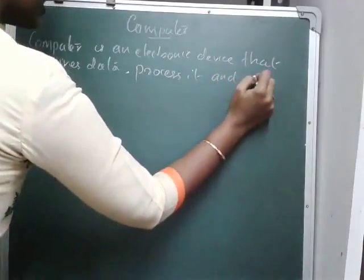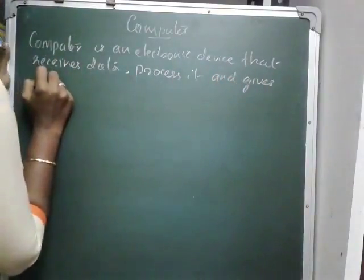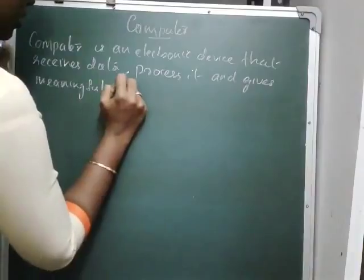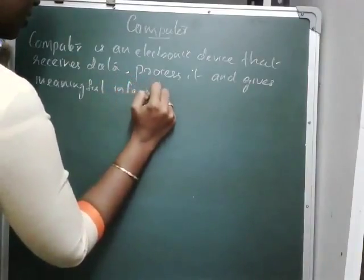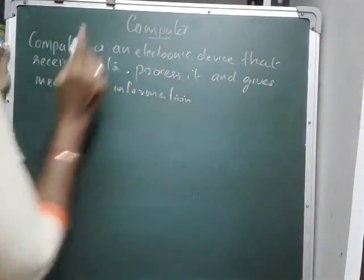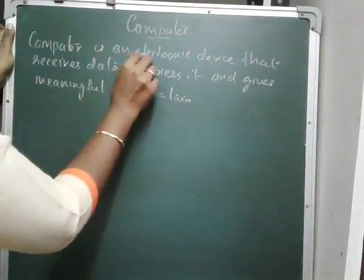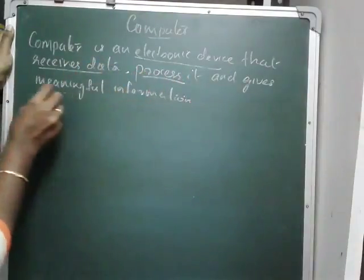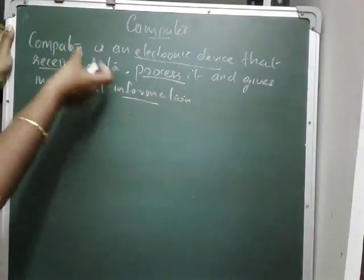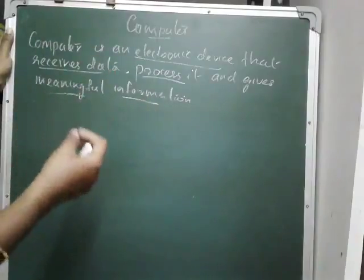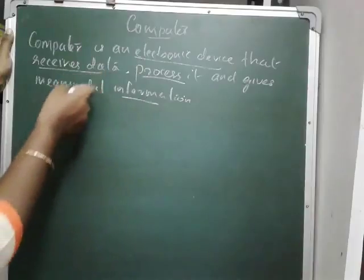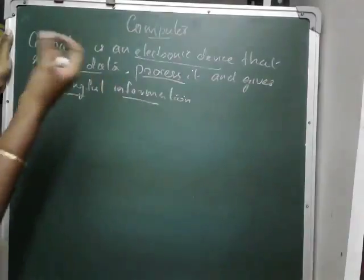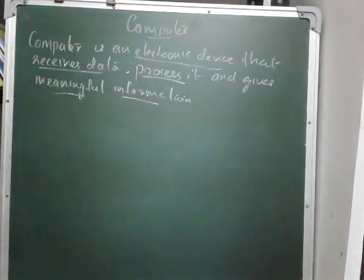And gives meaningful information. Computer is an electronic device that receives data, processes it and gives meaningful information. One data is a raw input; information has meaning. It is necessary to process the data. We know the electronic device is an electronic device.